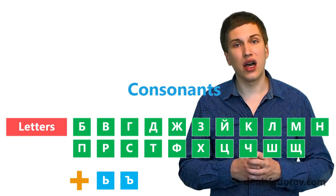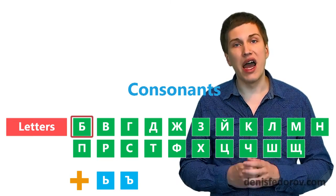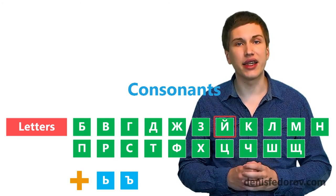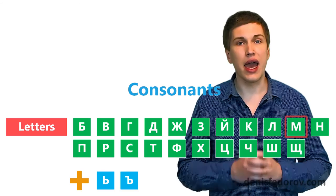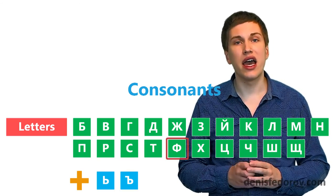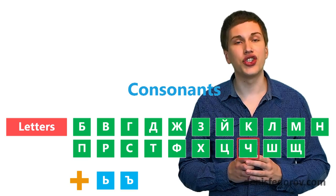There are 21 consonants in Russian. Б, В, Г, Д, Ж, З и краткое, К, Л, М, Н, П, Р, С, Т, Ф, Х, Ц, Ч, Ш, Щ.